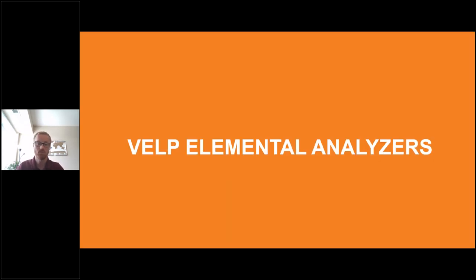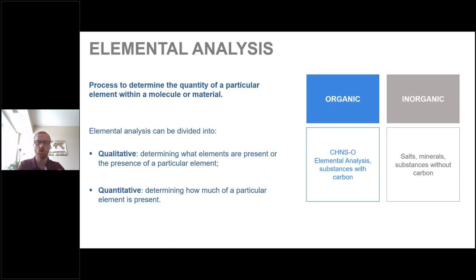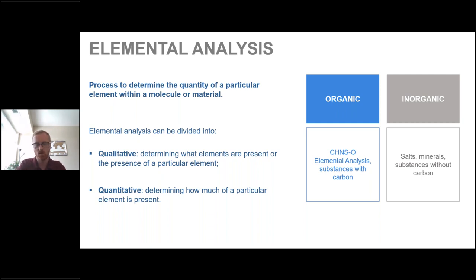Let's talk about VELP elemental analyzers, starting with elemental analysis. Elemental analysis is the process to determine the quantity of a particular element within a molecule or material. Examples of samples include cheeses, meats, wastewaters, and more across different analytical methods and industries. Elemental analysis can be divided into two distinct groups: qualitative — determining which elements are present — and quantitative — determining how much of a particular element is present in your sample.